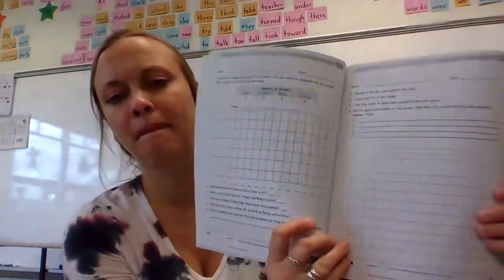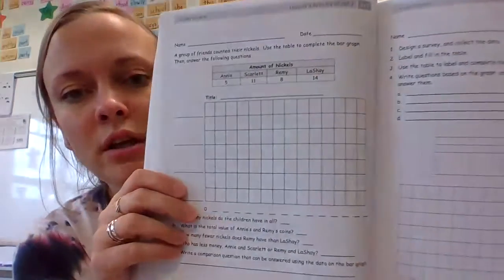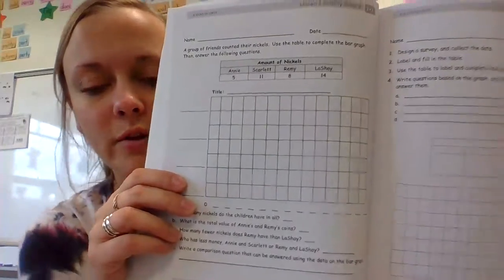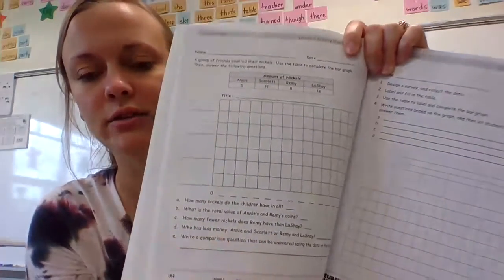Same thing. Okay a group. It says at the top, a group of friends counted their nickels. Use the table to complete the bar graph then answer the following questions. Cool. This is your table. You have to make a bar graph and then answer the questions.